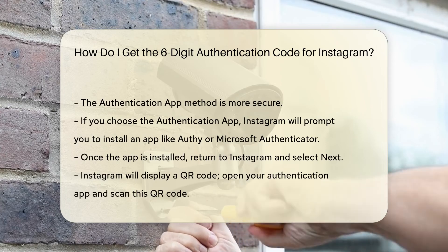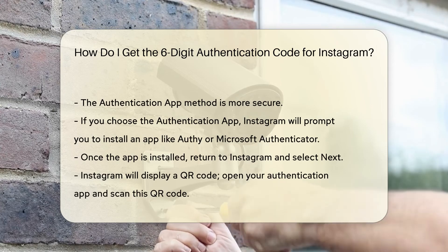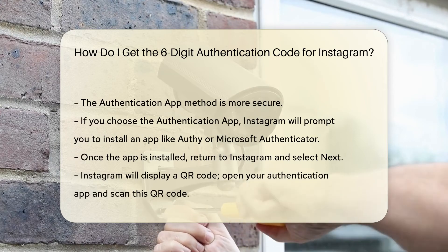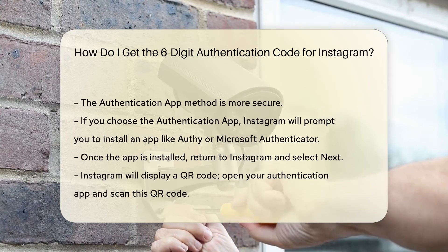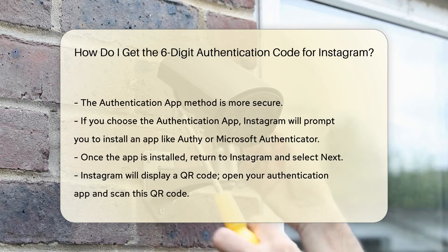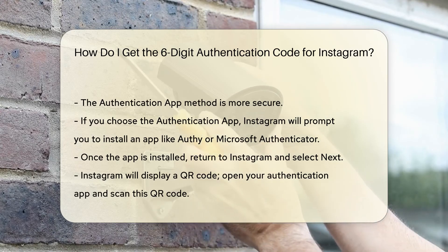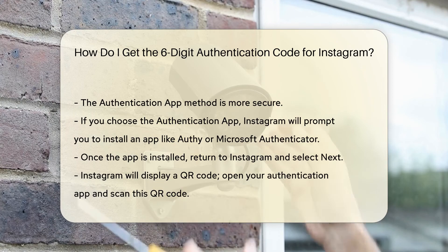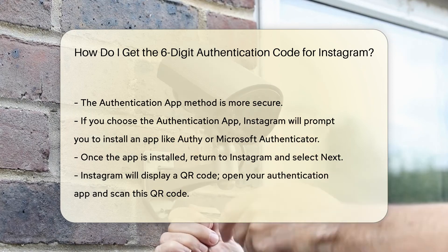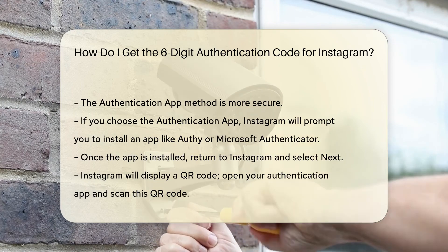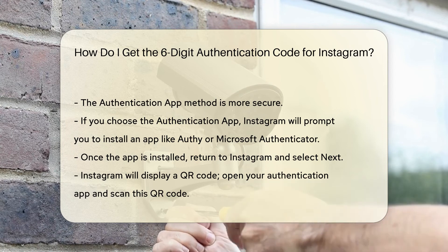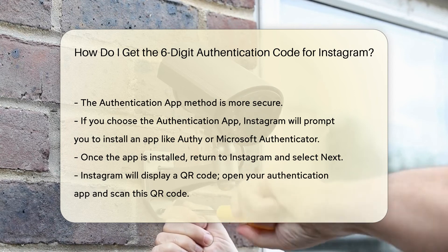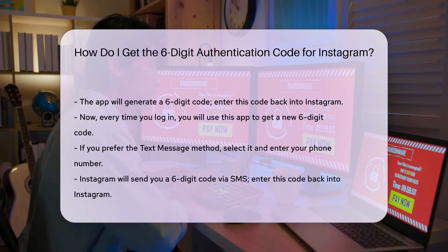The Authentication App method is more secure. If you choose this, Instagram will prompt you to install an authentication app like Authy or Microsoft Authenticator. Once the app is installed, return to Instagram and select Next. Instagram will display a QR code. Open your authentication app and scan this QR code. This will link your Instagram account to the app. The app will generate a six-digit code. Enter this code back into Instagram to complete the setup.